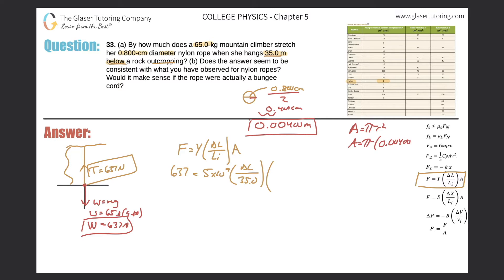One, two, yeah, and that is squared. So now here the area is going to be pi times 0.004 squared, so 5.03—sorry guys, 5.03 times 10 to the minus 5, and that's in meters squared.